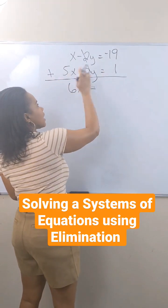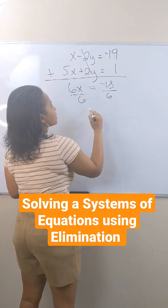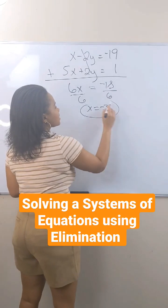Negative 19 plus 1, I'm adding vertically. That is negative 18. I'm left with just a one-step equation. And x equals negative 3.